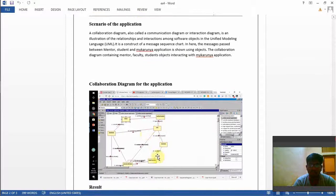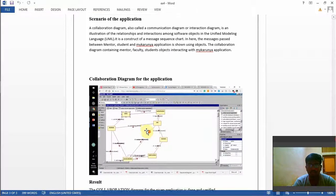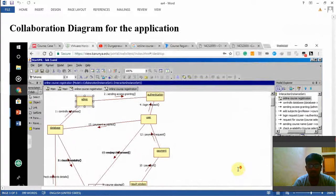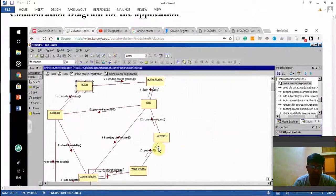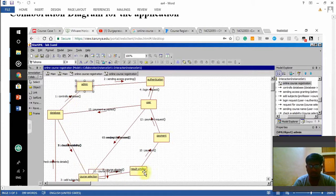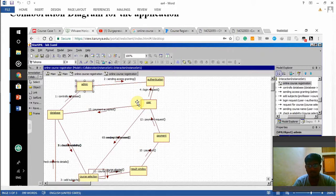This is my scenario. Here is the collaboration diagram for the application. As we can see here, there are different objects like admin, database, course selection, results window, payment, user authentication - all these things are interacting with each other in different ways.